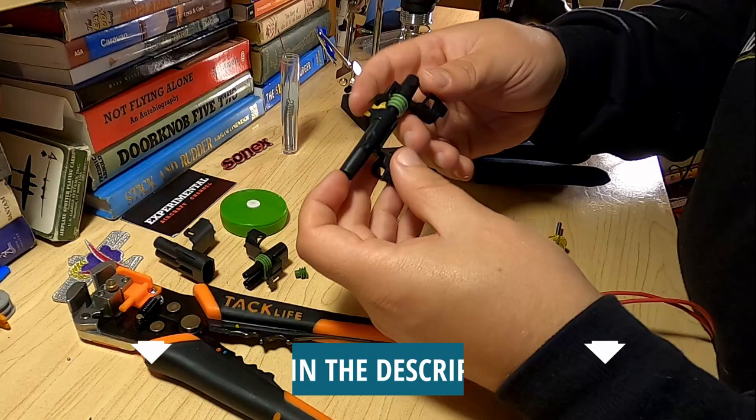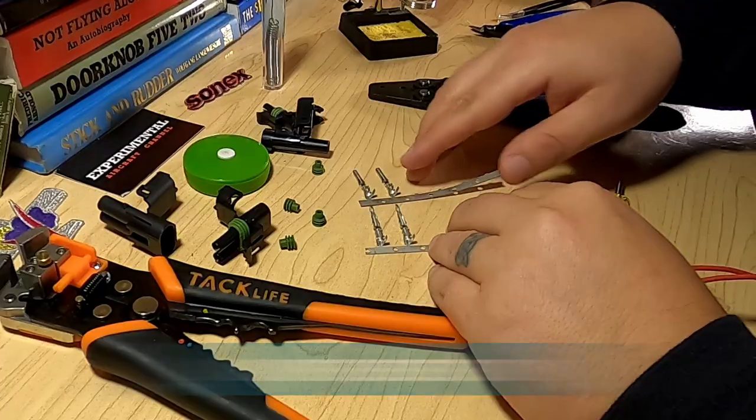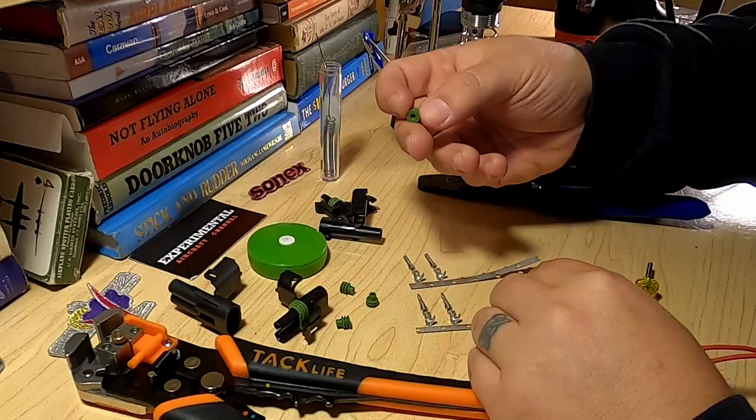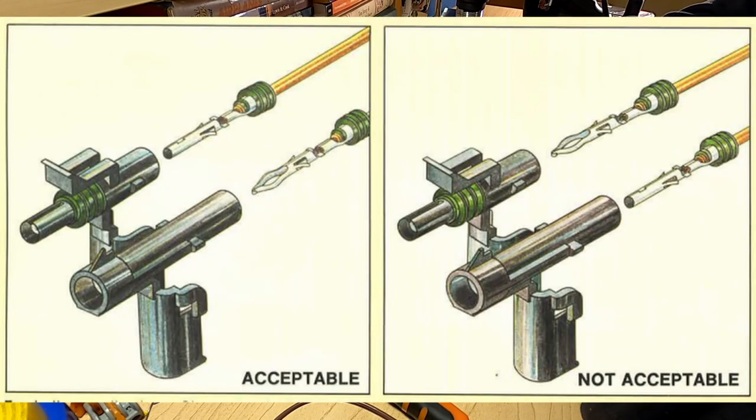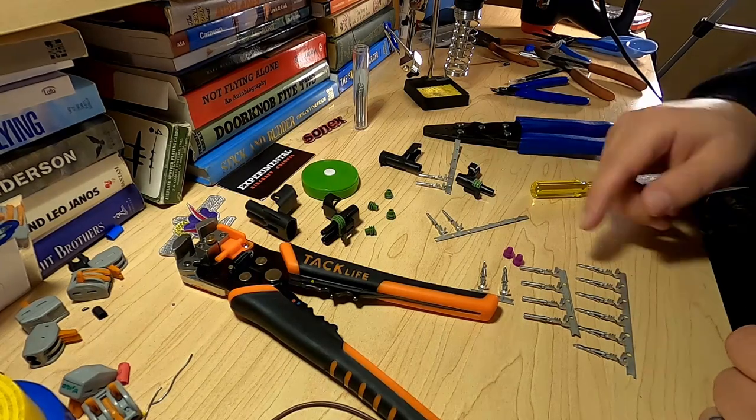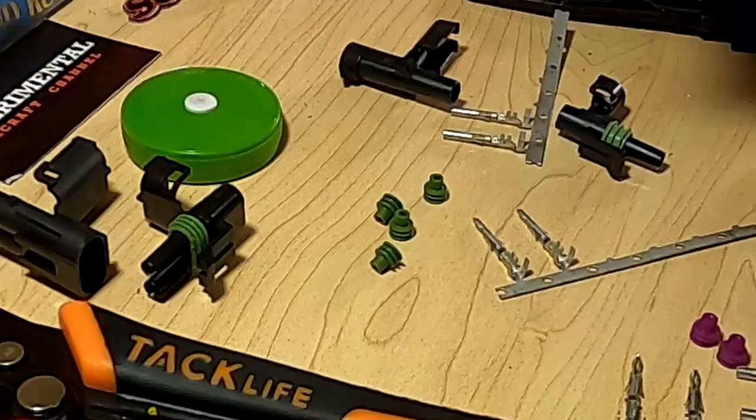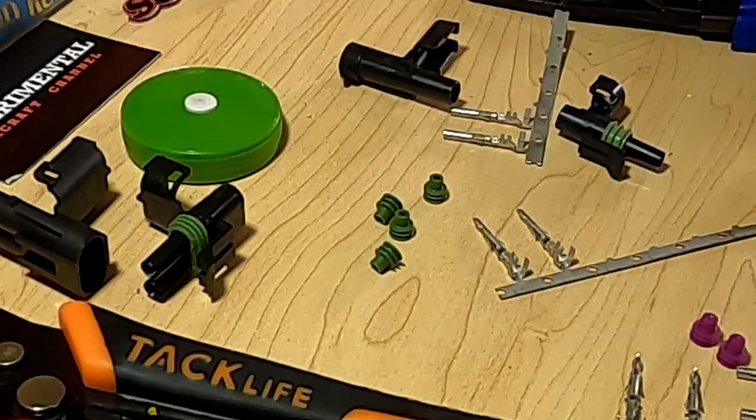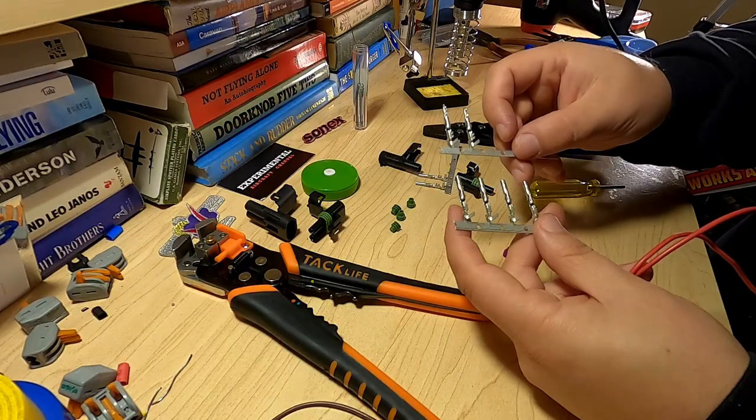When you order these, you get what they call the empty shell of the connector, which is both halves. And separately, you order the terminals that go inside. They also come with these color-coded silicone seals. So one thing to note that's in the manual, the male connector wants you to use a female terminal, and the female connector then wants you to use the male. These terminal sizes are color-coded. We've got the purple one for 18 to 20 gauge, and the green ones are 14 to 16 gauge. If you look closer, you can also see the terminal size is different to accommodate the differing wire sizes.